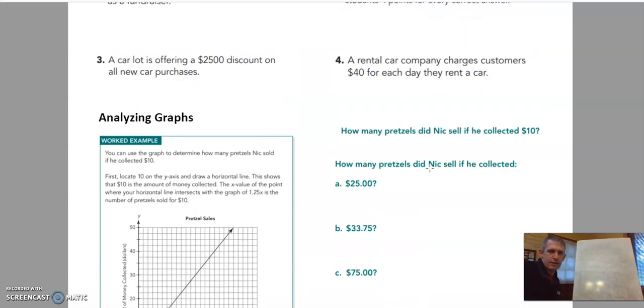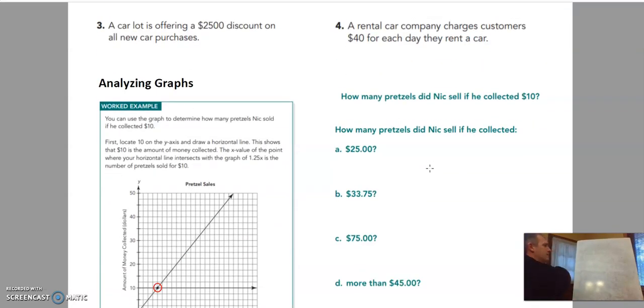So how many pretzels did Nick sell if he collected $10? Well, we know he sold eight pretzels. So this first question, how many pretzels if made $10? The answer would be eight pretzels. And that's just using the graph.